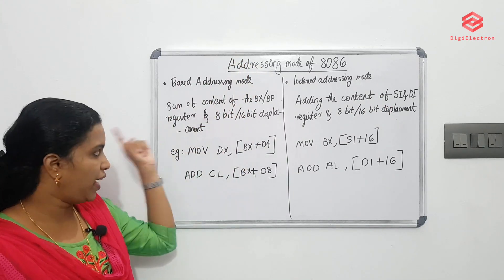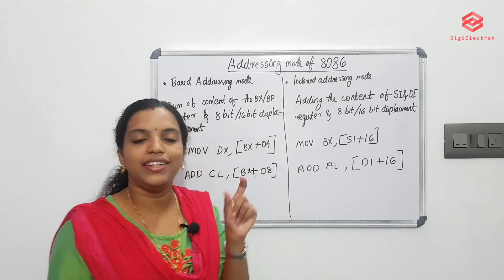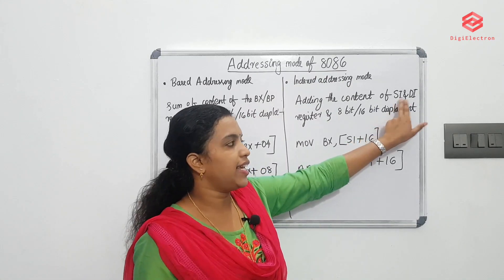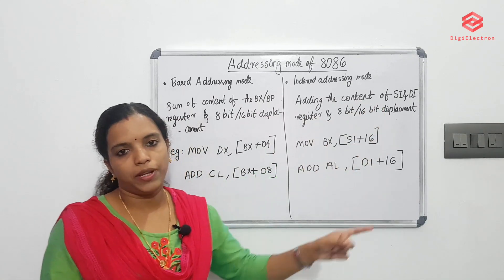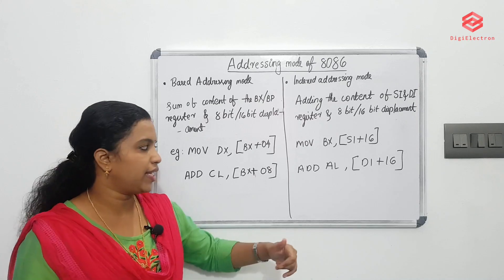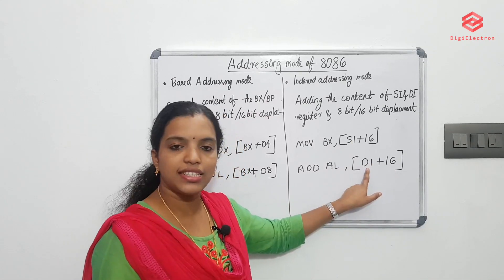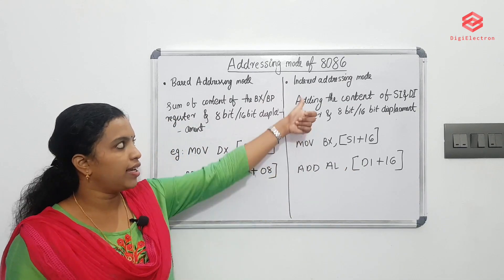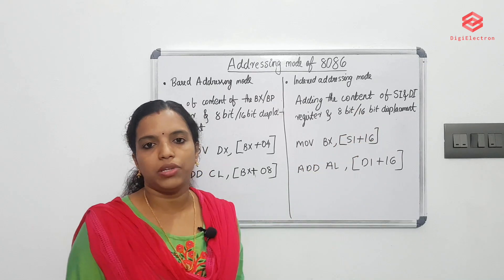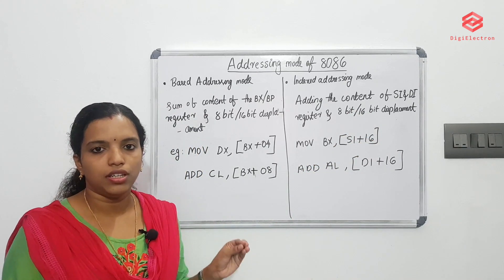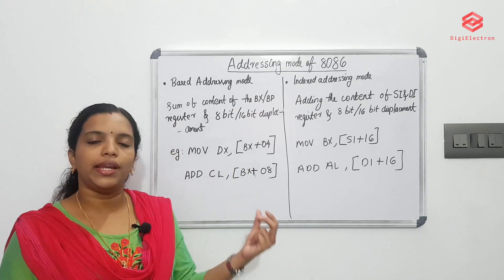The sixth one is indexed addressing mode. In indexed addressing mode, you use index registers SI and DI, plus an 8-bit or 16-bit displacement. For example, MOV BX, [SI + 16] or ADD AL, [DI + 16]. The effective address is the index register content plus the displacement.